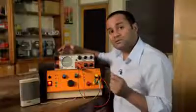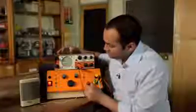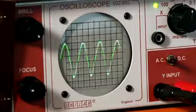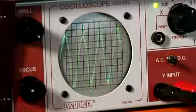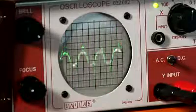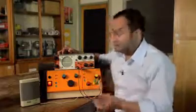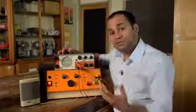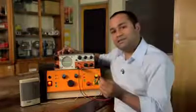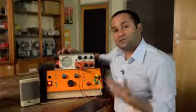So, let's see what happens when I change the amplitude. Again, you can see that as I increase the amplitude, the amplitude of the trace on the oscilloscope increases. And when I decrease the amplitude, the amplitude of the trace also decreases.